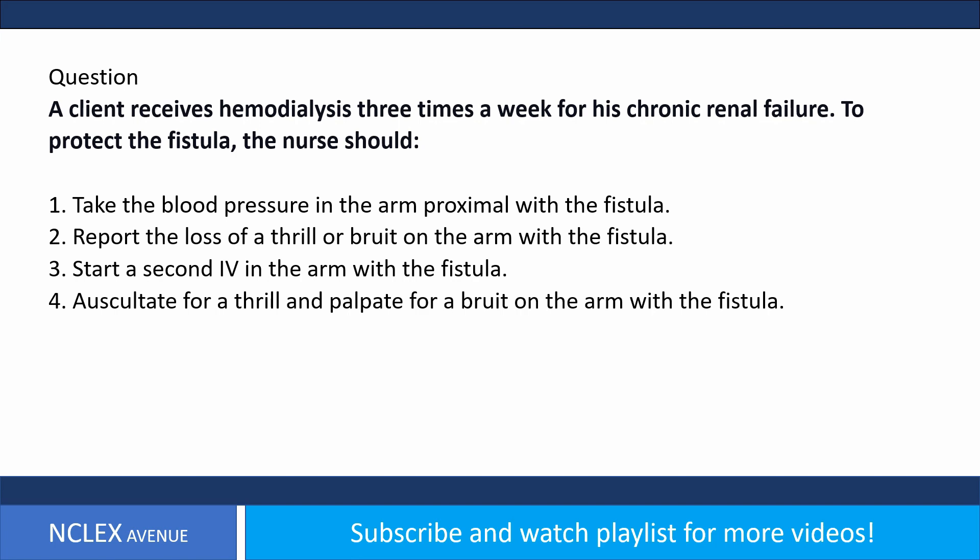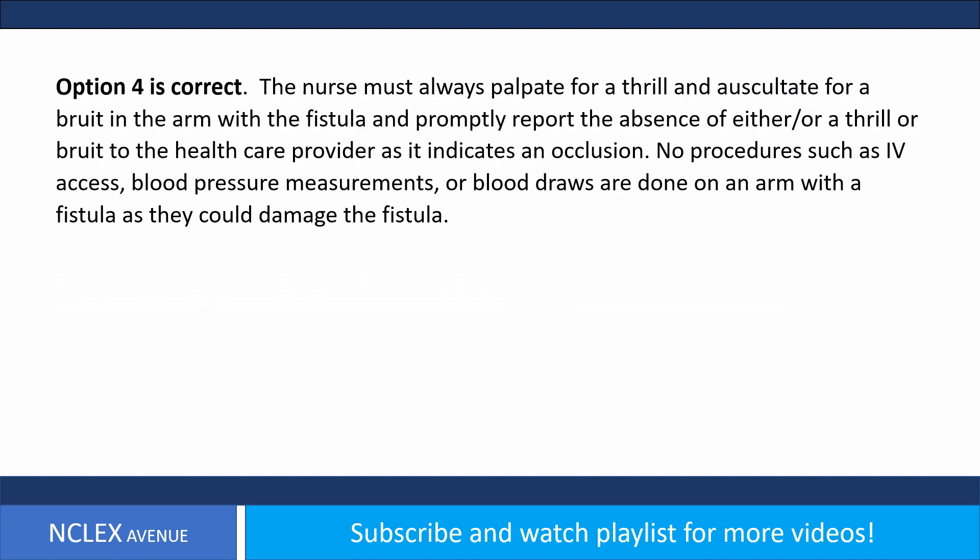Answer: option four is correct. The nurse must always palpate for a thrill and auscultate for a bruit in the arm with the fistula, and promptly report the absence of either to the health care provider, as it indicates an occlusion. No procedures such as IV access, blood pressure measurements, or blood draws are done on an arm with a fistula, as they could damage the fistula.